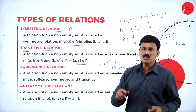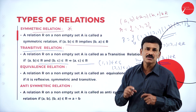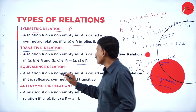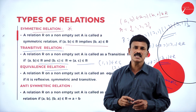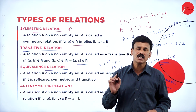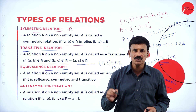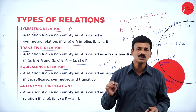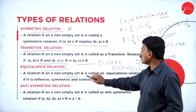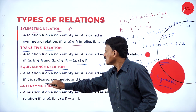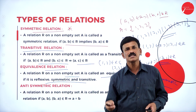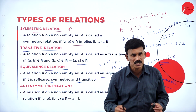Now if the relation R is reflexive, symmetric, and transitive, such a relation is called an equivalence relation. A relation R on a non-empty set A is called an equivalence relation if it is reflexive, symmetric, and transitive.